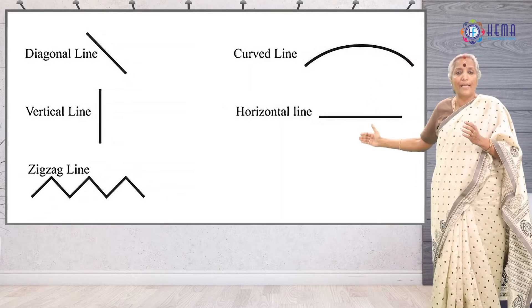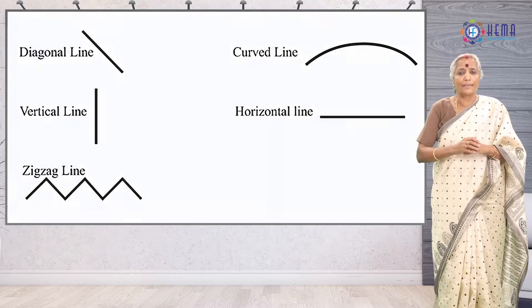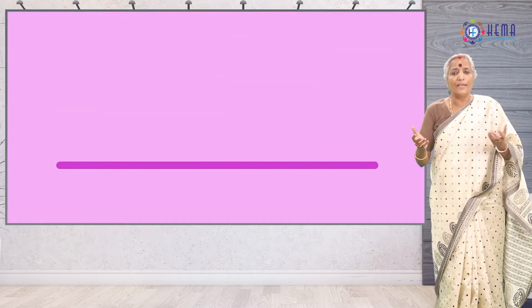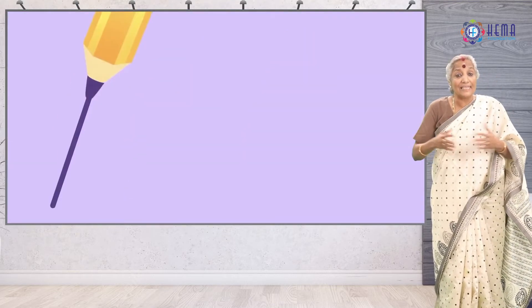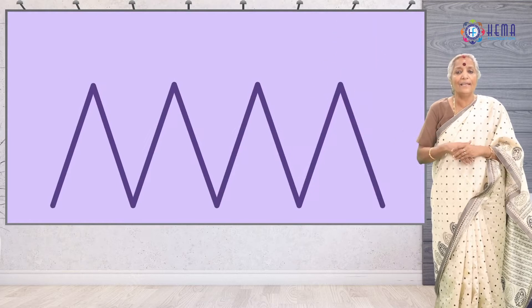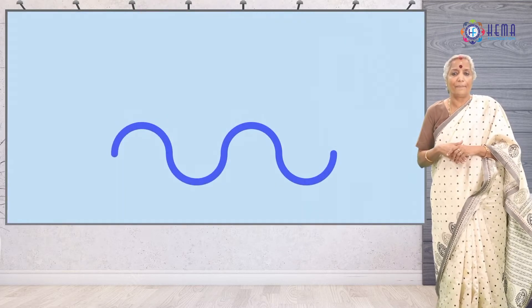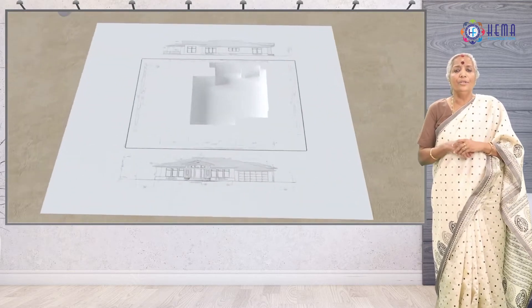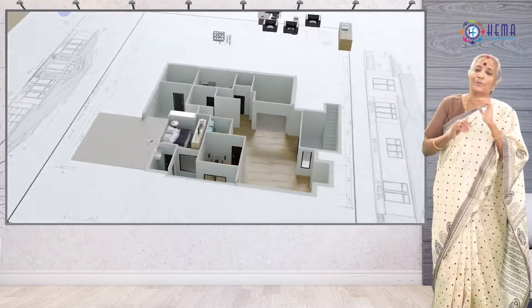Here are five main types of lines in art: vertical lines, horizontal lines, diagonal lines, zig-zag lines, and curved lines.